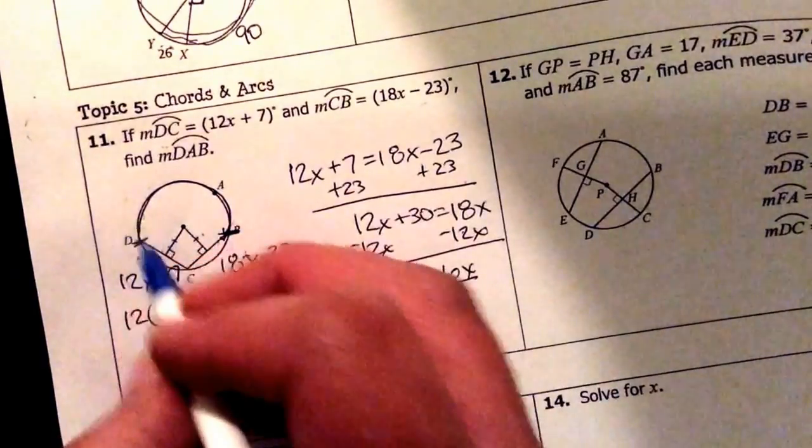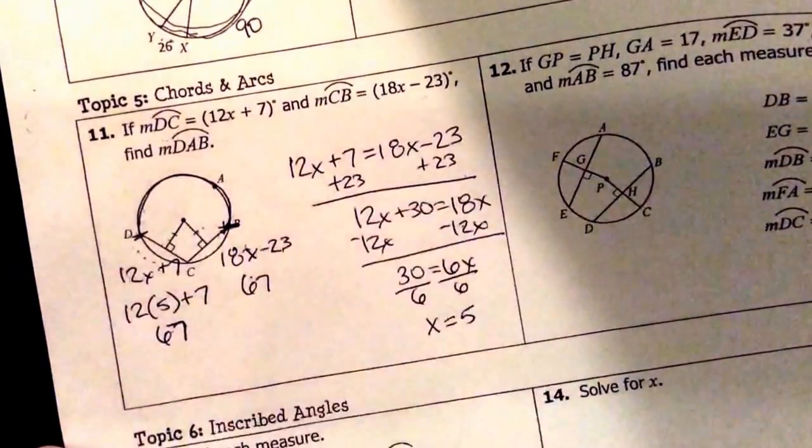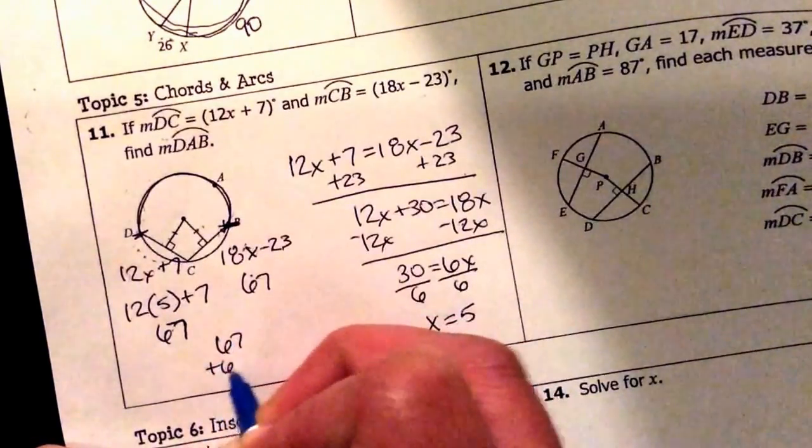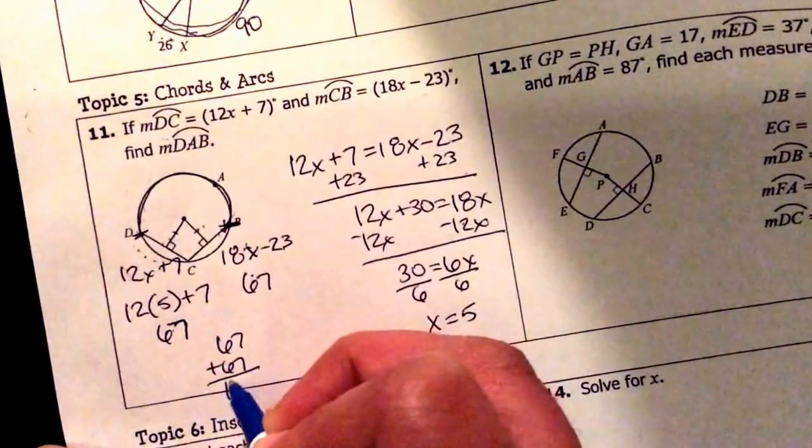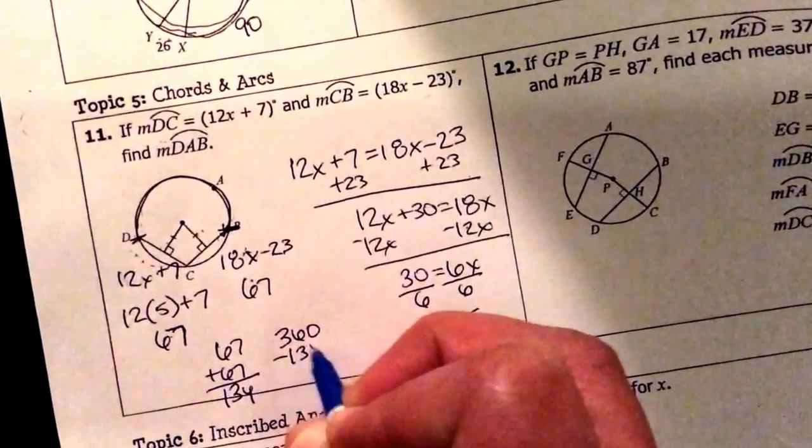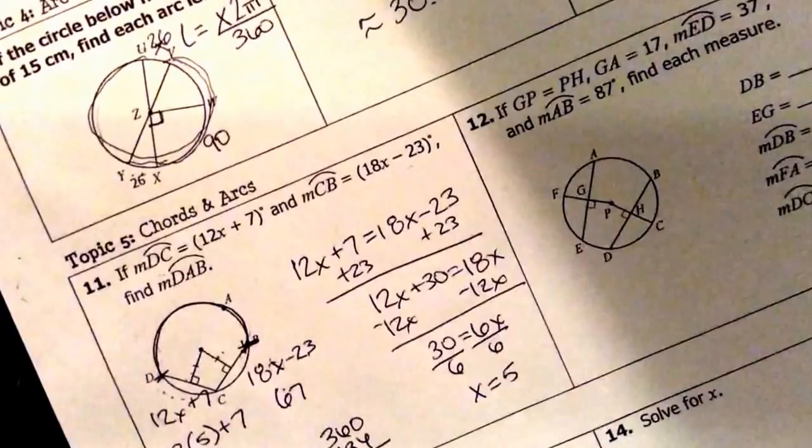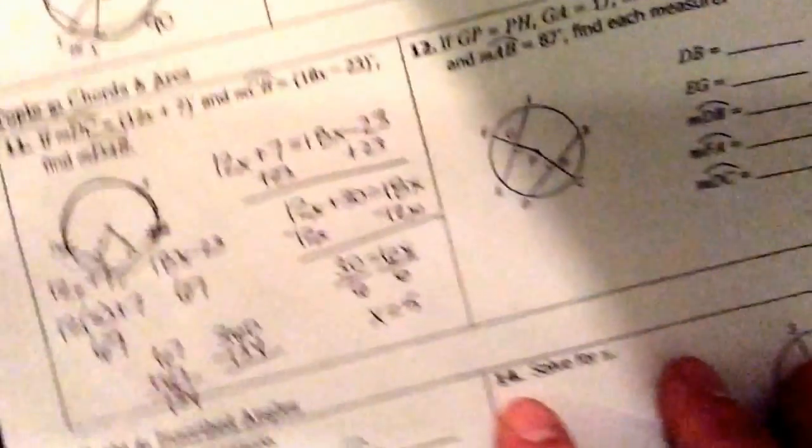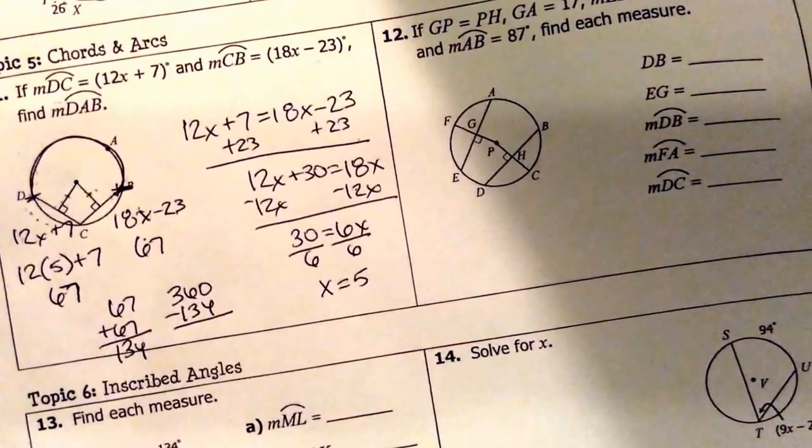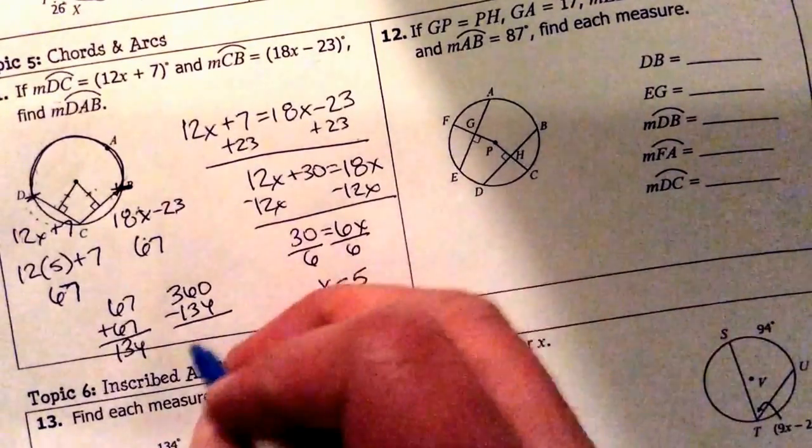Which also makes this 67 because they're congruent. I know that these two plus that one again equals 360. It's the whole circle. So if I take 67 plus 67, that's 134. And I take that away from 360. That's going to be my missing piece. That's 226.